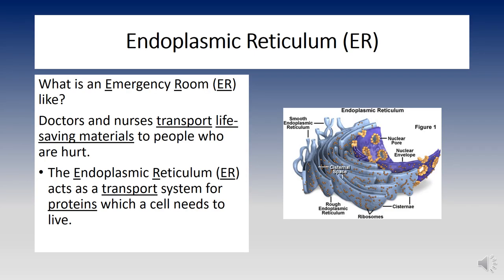Now let's visit the ER — the endoplasmic reticulum. It's a lot like an emergency room, which is chaotic with doctors and nurses running around trying to give life-saving supplies to people who are hurt or sick. It's known as the highway of the cell — it transports much-needed proteins, which keeps the cell functioning properly.